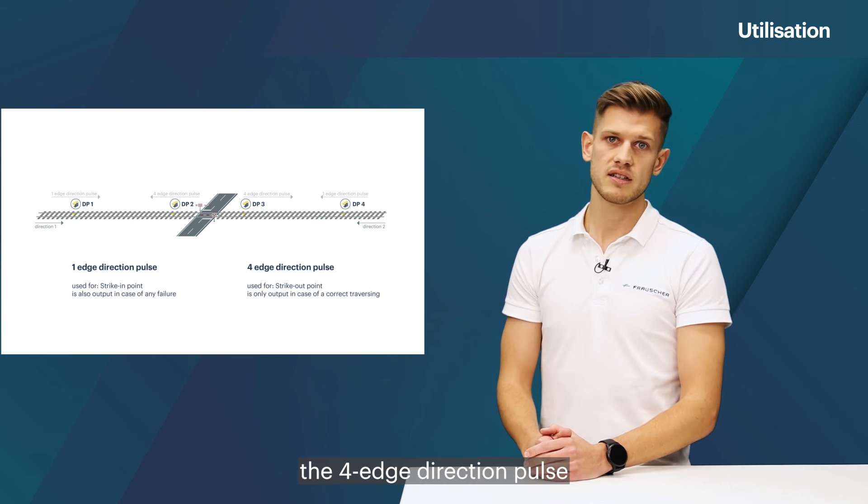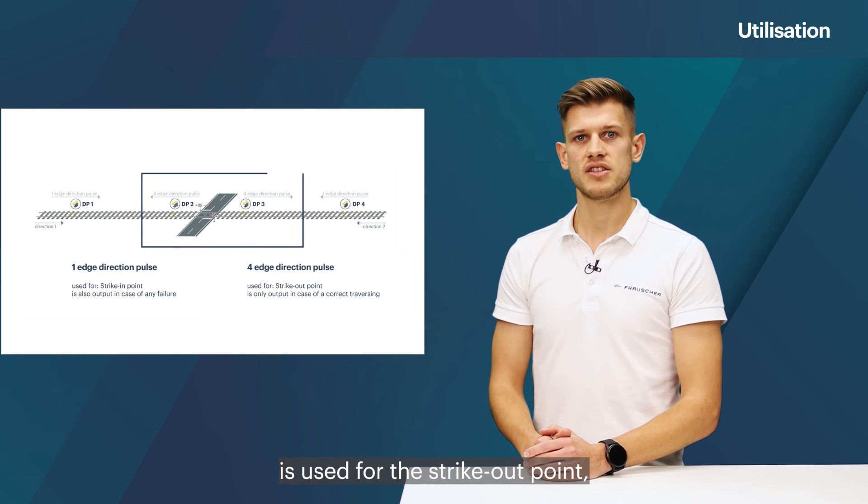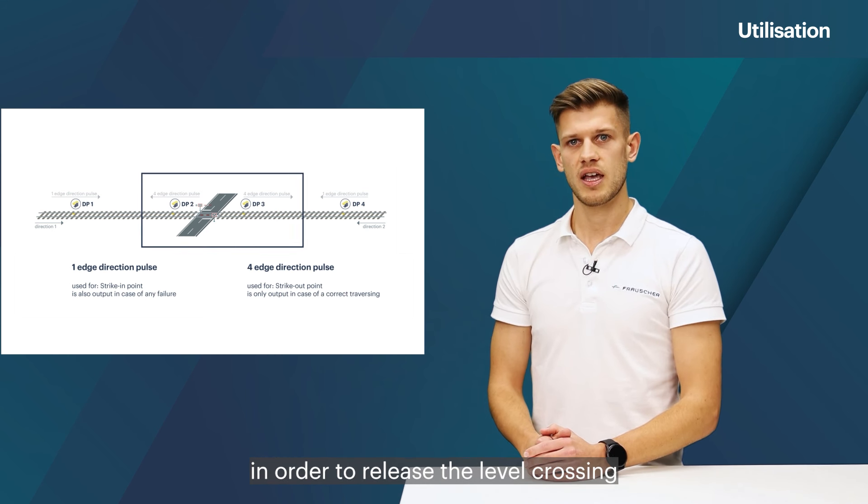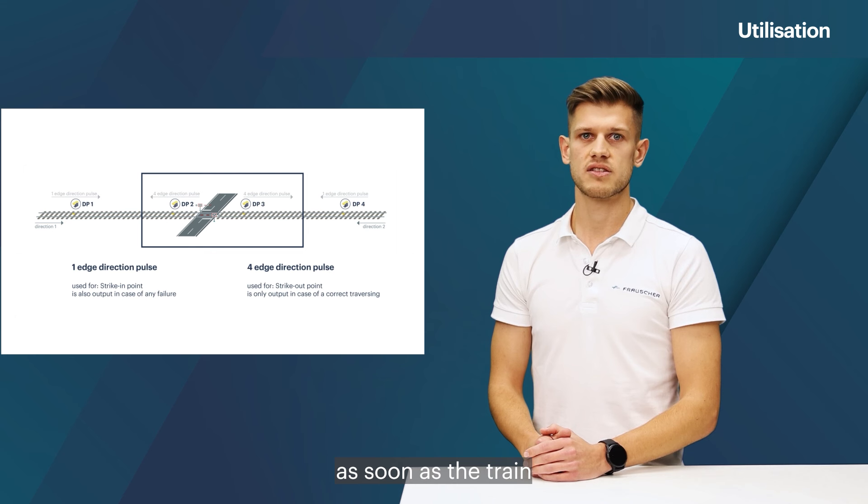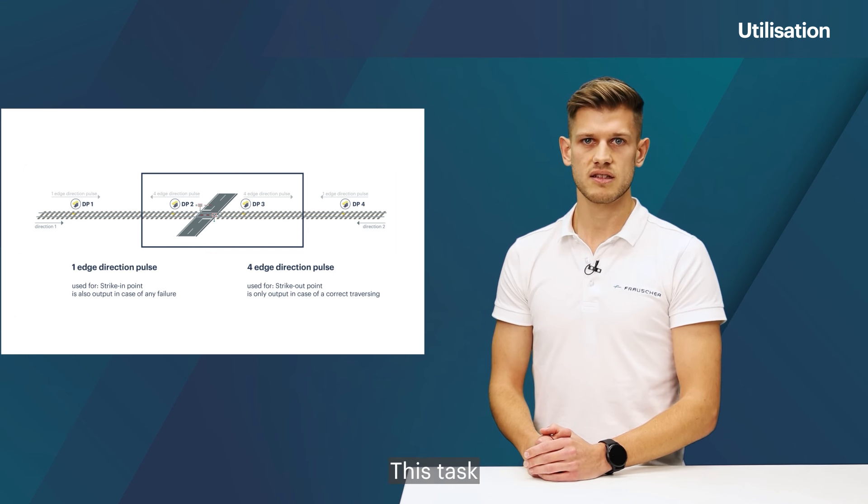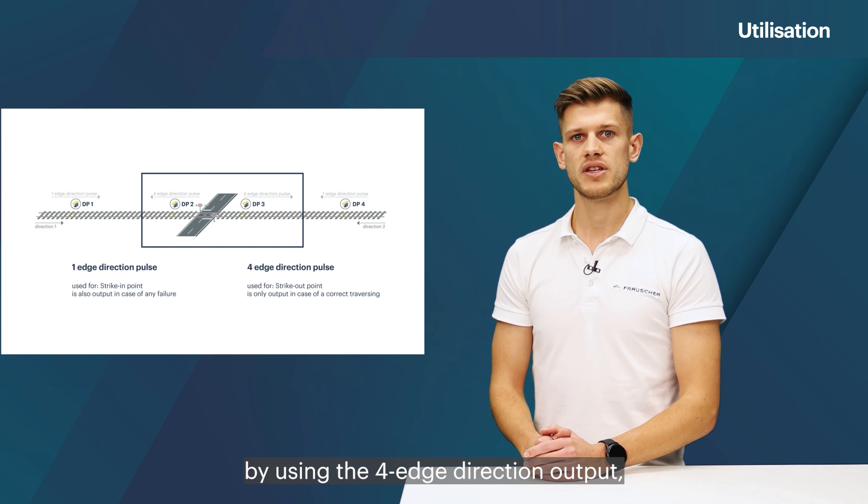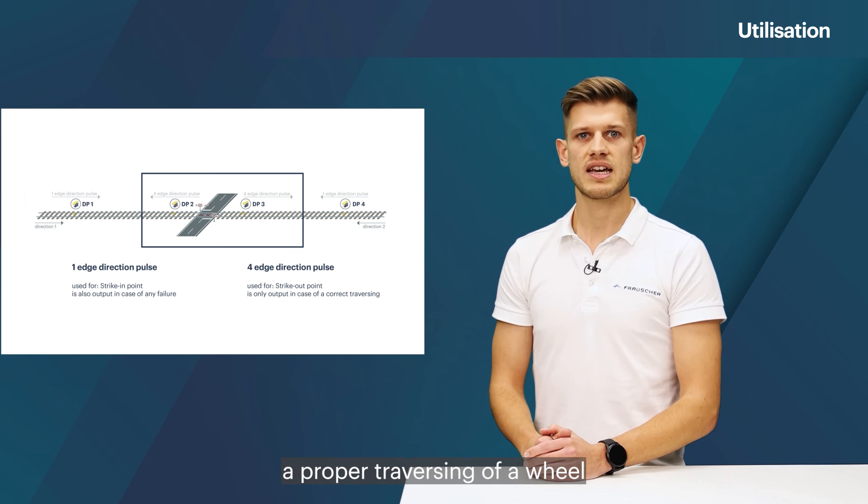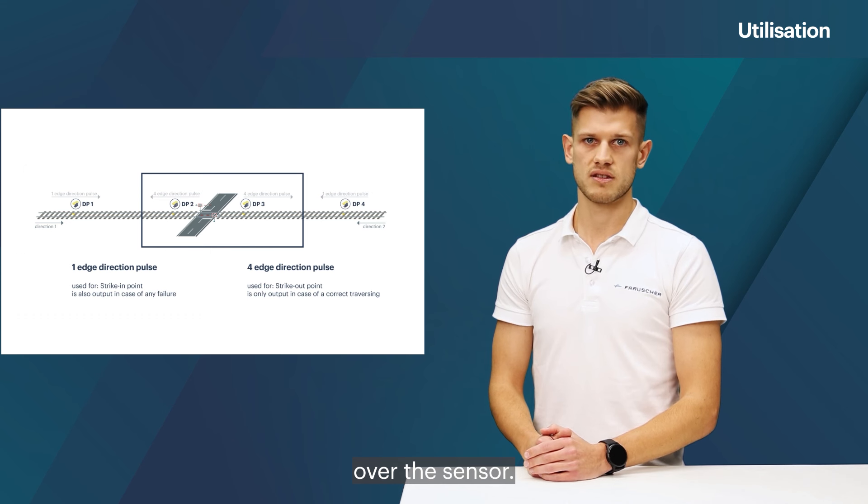On the other hand, the four-edge direction pulse is used for the strike-out point in order to release the level crossing as soon as the train moves away from the crossing. This task may only be carried out by using the four-edge direction output as this pulse indicates a proper traversing of a wheel over the sensor.